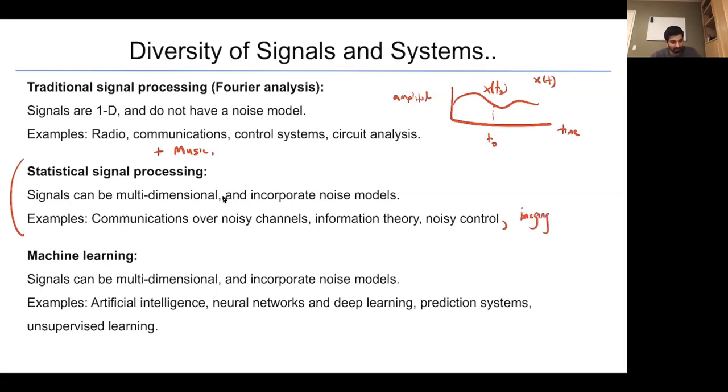Finally, we also have machine learning. In machine learning, signals are multi-dimensional and incorporate noise, but we use pattern matching techniques to essentially aid us in learning how to manipulate these signals. Examples include AI, neural networks, deep learning, prediction systems, and unsupervised learning.